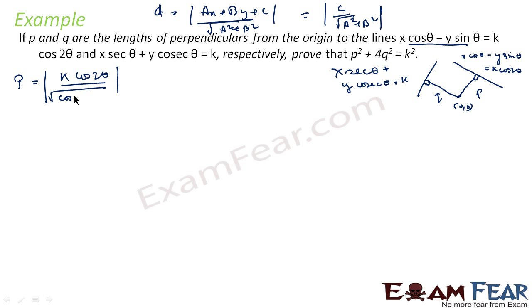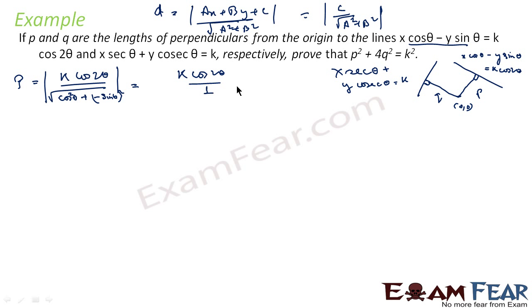Here a = cosθ and b = −sinθ, so a² + b² = cos²θ + sin²θ = 1. Therefore p = k·cos2θ / 1, which simply gives p = k·cos2θ.